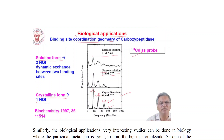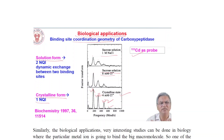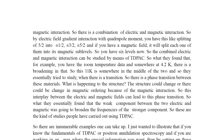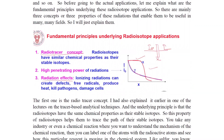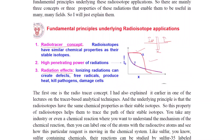There are also biological applications — for example, binding site coordination and geometry of carboxypeptidase. Fundamental principles underlying radioisotope applications include the radiotracer concept: radioisotopes have similar chemical properties as stable isotopes. They have high penetrating power of radiation. Radiation effects include ionizing radiation that can create defects, free radicals, produce heat, kill pathogens, and damage cells.